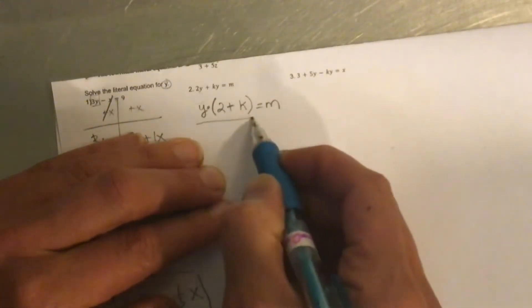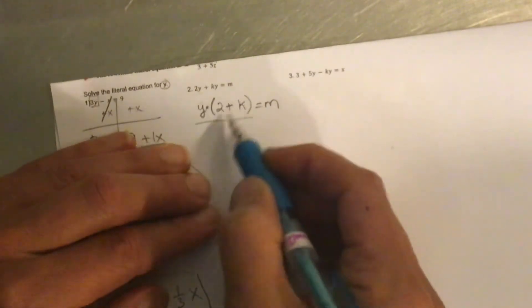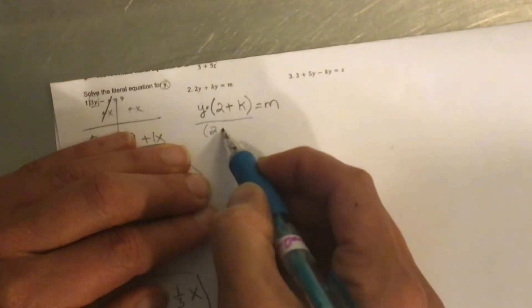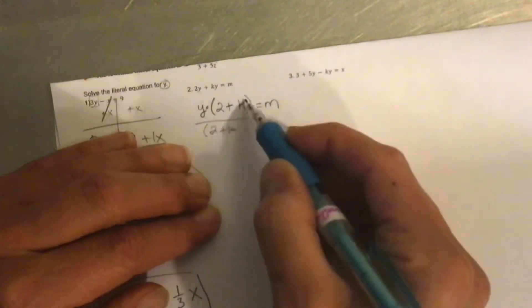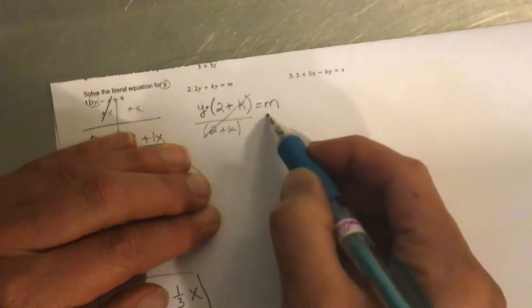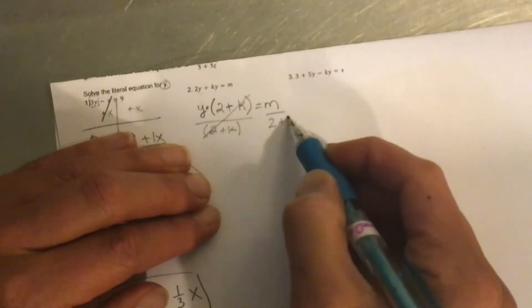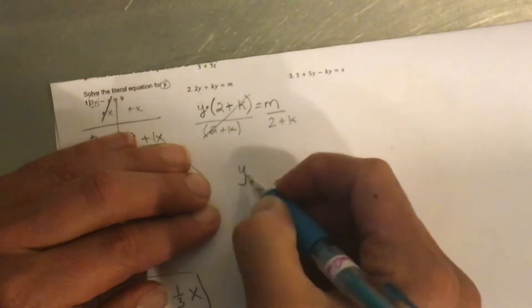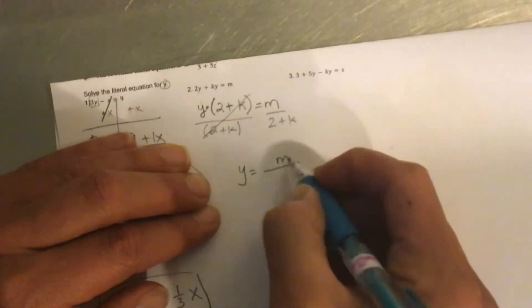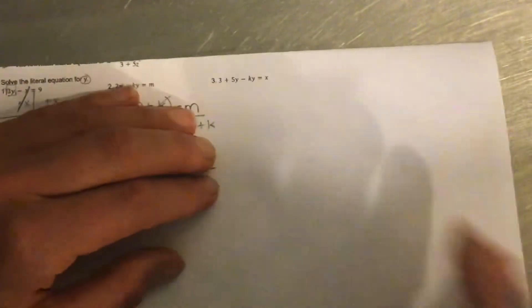And those two are multiplying, right? And so I can take this whole entire, everything in the parentheses, and divide 2 plus k. And if I divide this side by 2 plus k, then I divide this side by 2 plus k. So y equals m divided by 2 plus k.